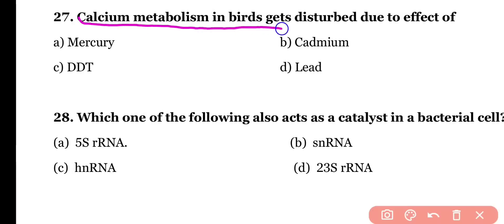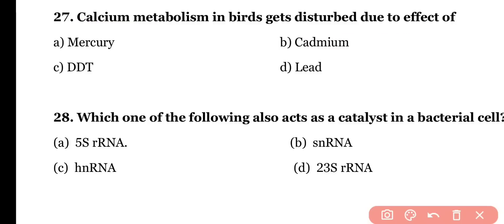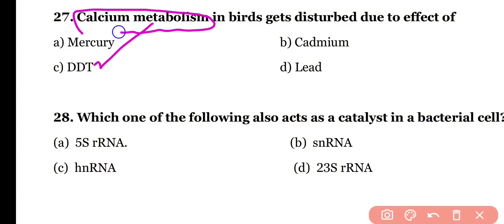Question number twenty-seven: calcium metabolism in birds gets disturbed due to the effect of (a) mercury, (b) cadmium, (c) DDT, or (d) lead. The correct answer is option C — DDT causes disturbance in calcium metabolism in birds.